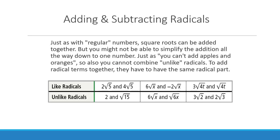When you add and subtract radicals, just like you need like terms when adding and subtracting polynomials, you need like radicals. For example, 2√5 and 4√5 can be combined because they both have √5. Treat them just like variables. 6√x and −2√x can be combined; 3√(4t) and √(4t) can be combined — if there's no number out front, there's an understood 1. Unlike radicals cannot be combined: √x and √(6x) are not alike, and √2 and √3 are not alike — just like you can't add x's and y's.